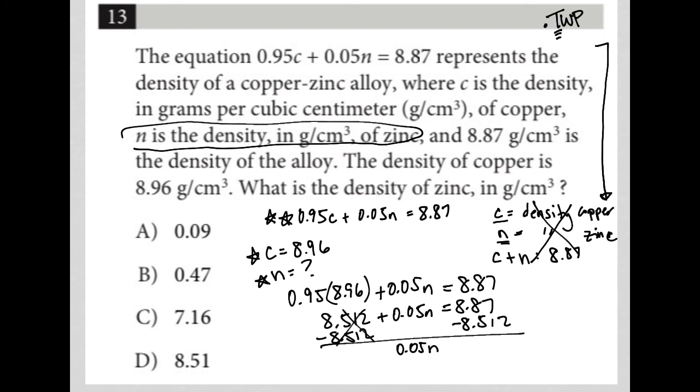Again, my calculator, 8.87 minus 8.512 gives me 0.358, and then I divide by 0.05 in order to solve for N.